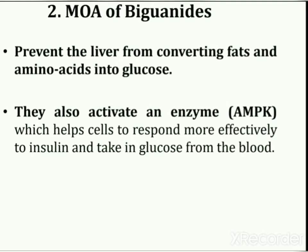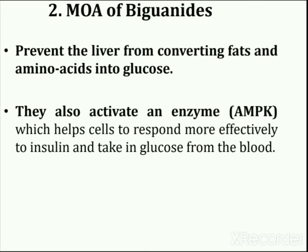Next is mode of action of biguanides. Biguanides work by preventing the liver from converting fats and amino acids into glucose. They also activate an enzyme AMPK, which is adenosine monophosphate activated protein kinase. This enzyme plays a vital role in cellular energy homeostasis, largely to activate glucose and fatty acid uptake and oxidation when cellular energy is low.